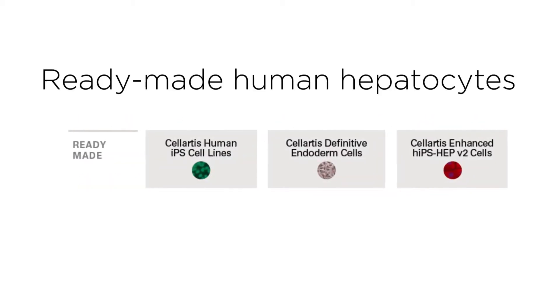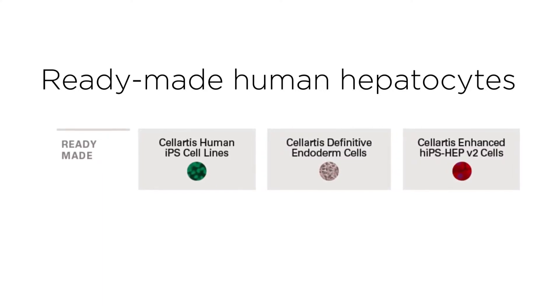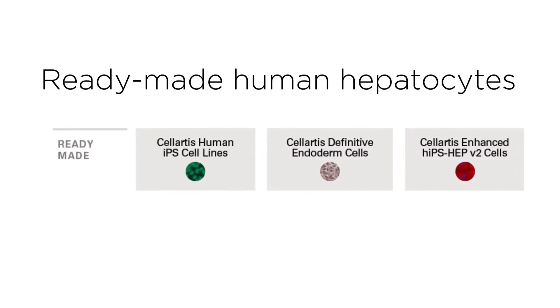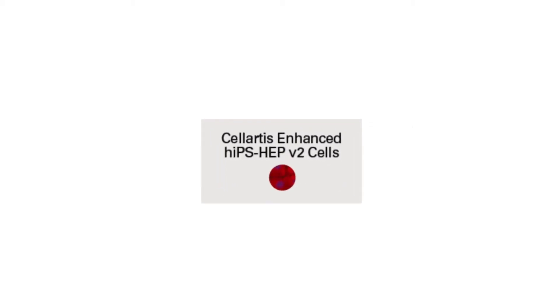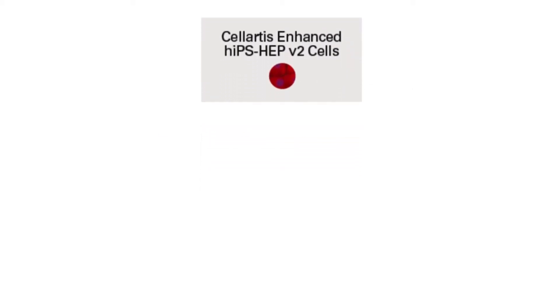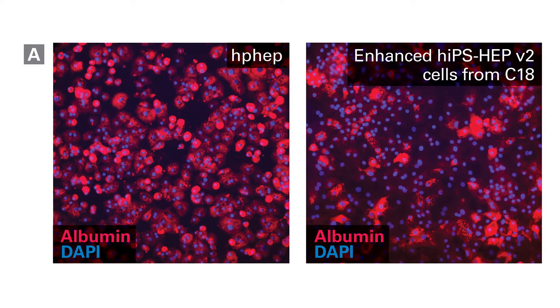Already-made human iPS endoderm and HIP-HEP cells are functional and mature. Solartis-enhanced HIP-HEP V2 cells are designed for applications requiring long-term culture. After nearly four weeks in culture, these cells have stable CYP-450 activity, express mature hepatic markers, and secrete albumin and urea.